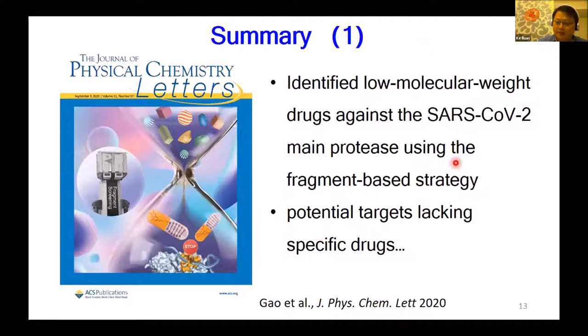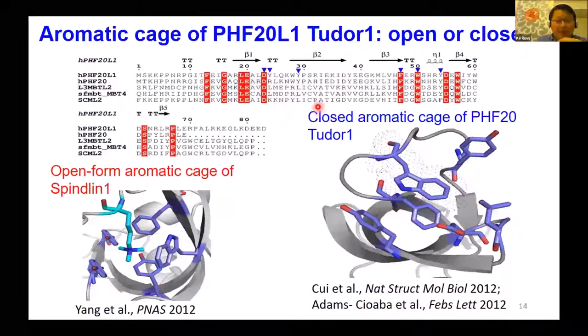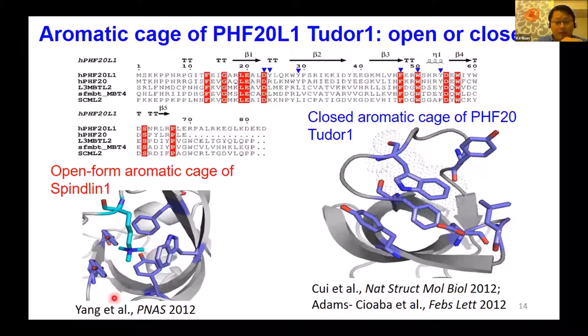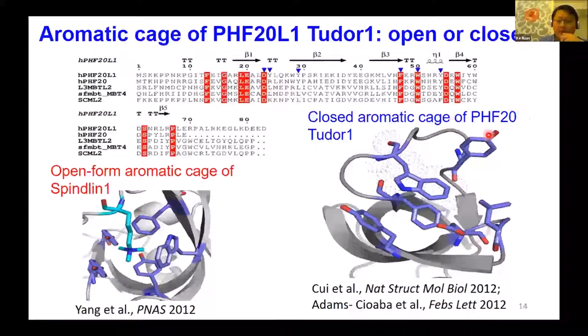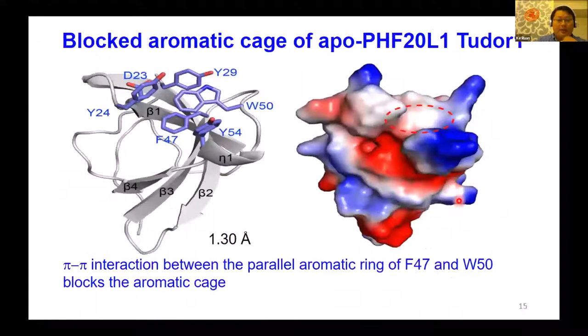As we know, Tudor domains usually use three to five aromatic residues that form a cage — called an aromatic cage — to accommodate methylated lysine or arginine. But for PHF21A, they also have a Tudor domain with very high sequence similarity to PHF20, but this protein has a closed pocket. We first solved the crystal structure of the free-form PHF20L1 and found that it does indeed have a closed pocket in the ground state.